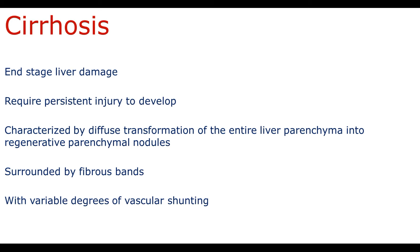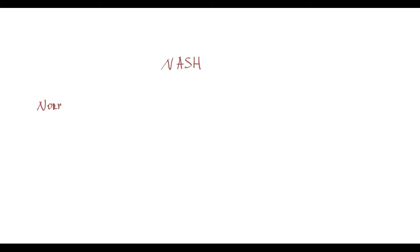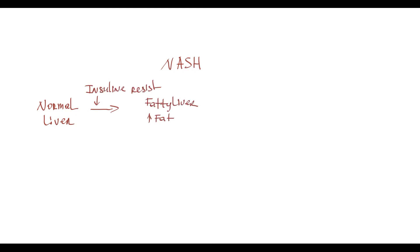The definition of cirrhosis can be divided on several specific characteristics. First of all, cirrhosis is end-stage liver damage. As an example, let's take the pathogenesis of non-alcoholic fatty liver disease. At start there is a normal liver, and then with development of insulin resistance, fatty liver develops with excessive accumulation of fat, but there is little or no inflammation.